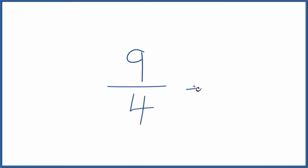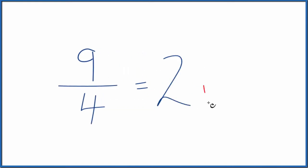So four goes into nine two times, and there's a remainder of one. It's because two times four is eight plus one. That gives us nine.